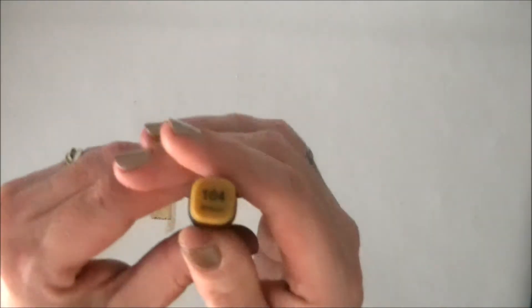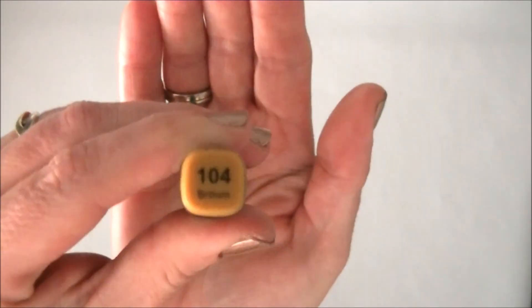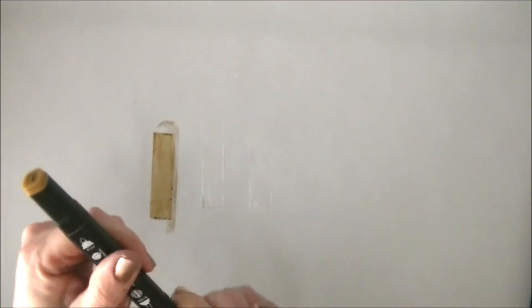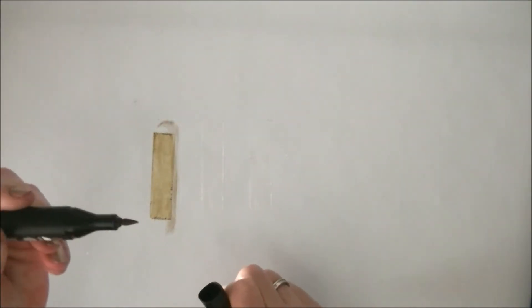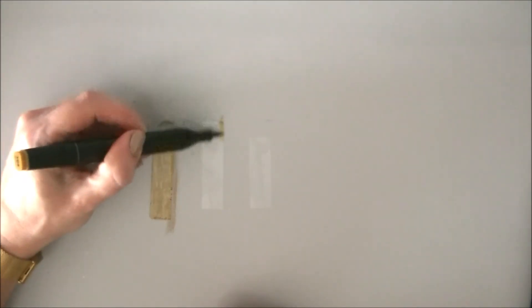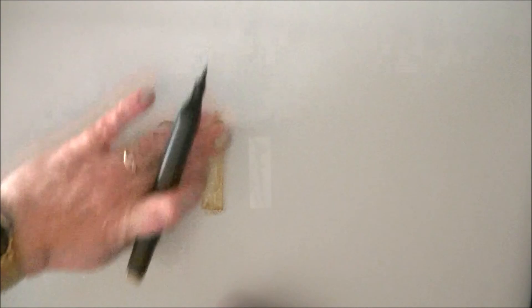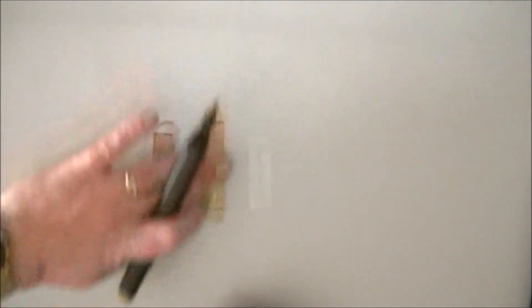And the next color that I'm using is this brown one. And again, I'm using the brush tip for this. And I'm just coloring it and smudging it a little bit with my finger. And it dries really quickly.